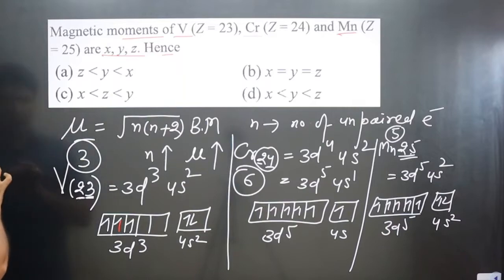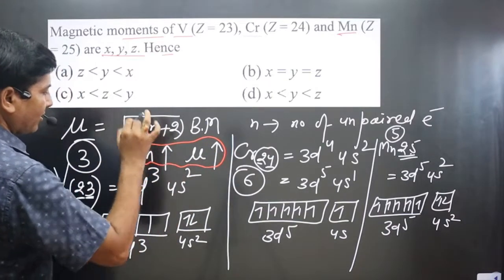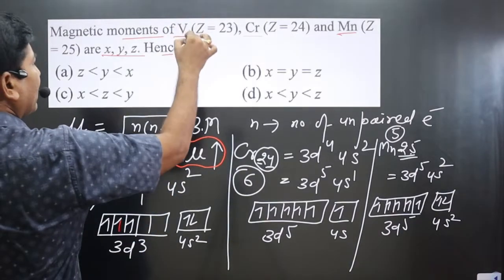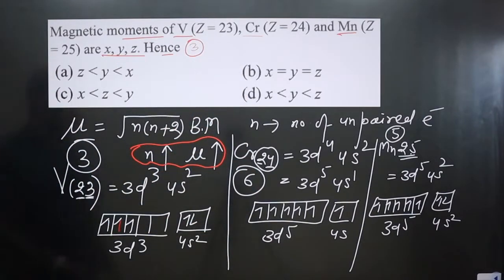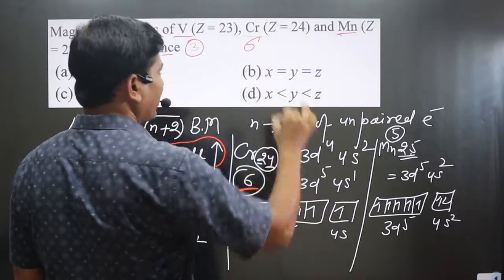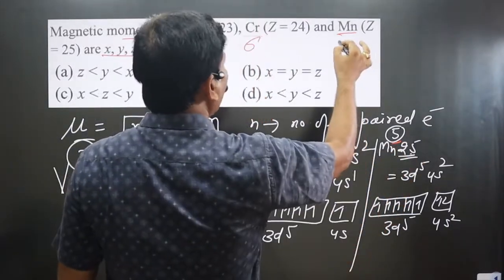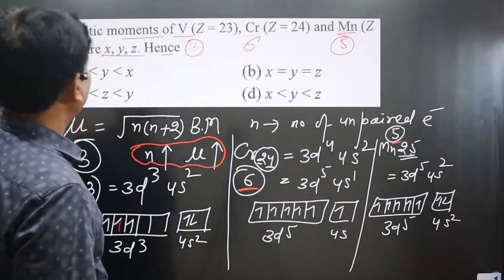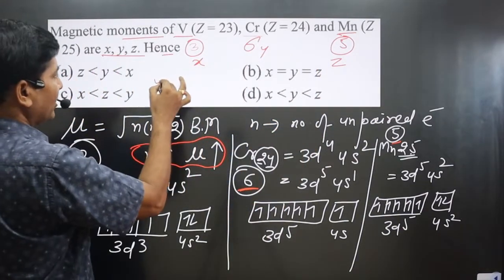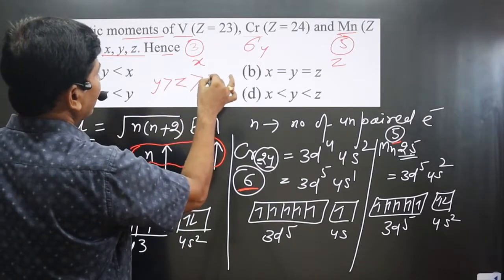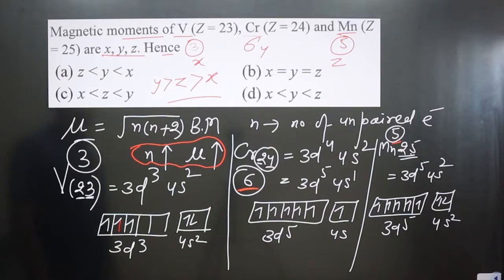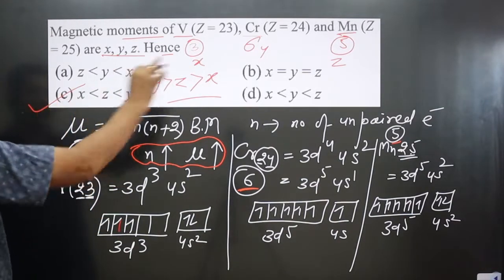Since higher n gives higher magnetic moment: vanadium (x) has 3 unpaired electrons, chromium (y) has 6 unpaired electrons, and manganese (z) has 5 unpaired electrons. So y is maximum, then z, then x — the order is y > z > x. Option C is correct.